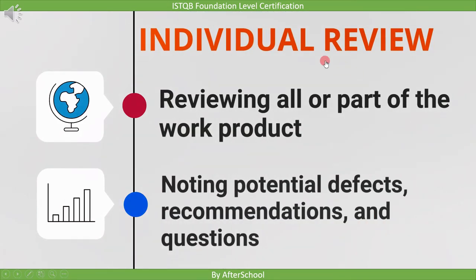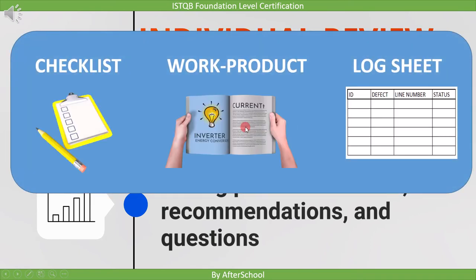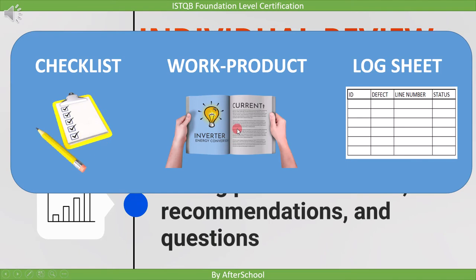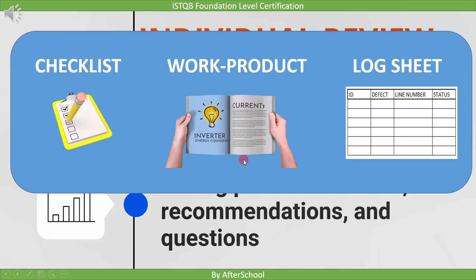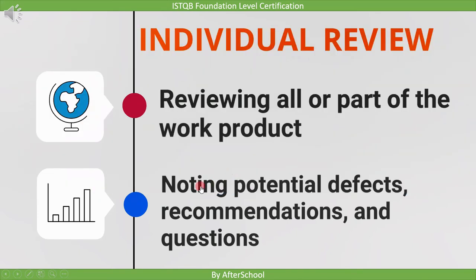Now let's move to the third activity: individual review. This is where review of all or part of the work product takes place. The checklist contains questions which the reviewer reads and checks the work product against. If the work product violates a question, the defect is logged in the log sheet. For example, a question could be: are all the words spelled correctly? If the reviewer finds wrong spelling, it is a defect and is documented in the log sheet. In addition to defects, we can also enter recommendations and questions in the log sheet.